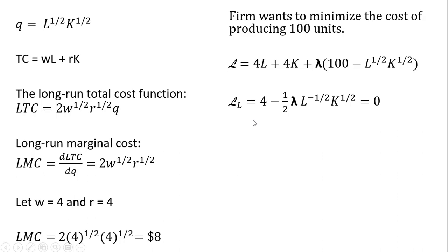We're going to take three partial derivatives: the partial derivative of the Lagrangian with respect to units of labor, set that result equal to 0; partial derivative of the Lagrangian with respect to units of capital K, set that result equal to 0; and finally, the partial derivative of the Lagrangian with respect to lambda, setting that result equal to 0.